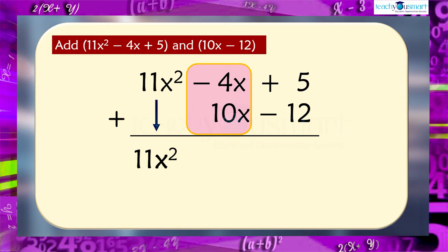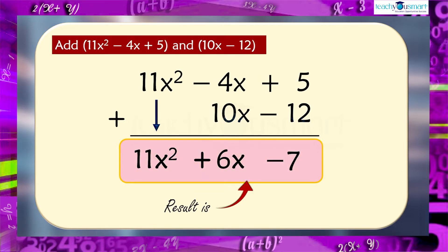Then minus 4x plus 10x equals 6x and 5 plus minus 12 equals minus 7. Therefore, the result is 11x square plus 6x minus 7.